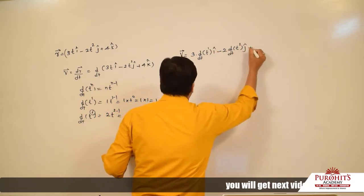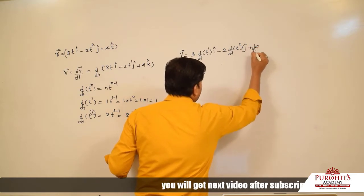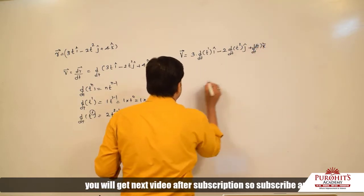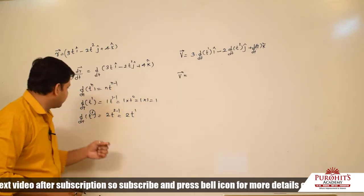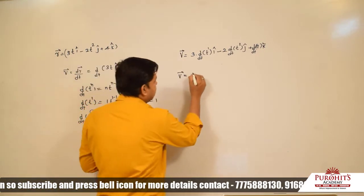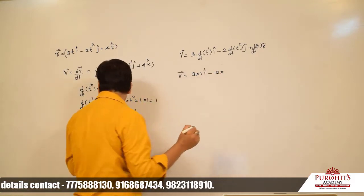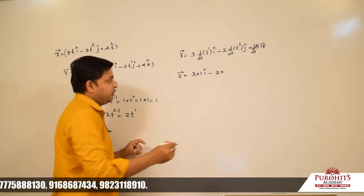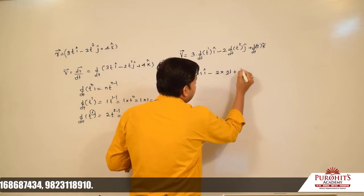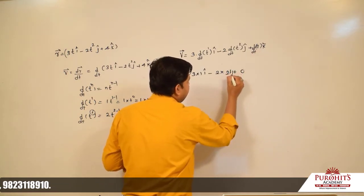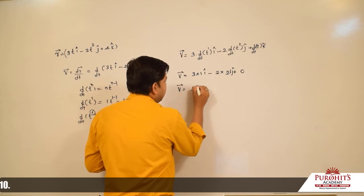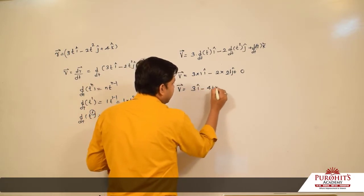Differentiation of 4 with k cap gives us velocity. t power 1 becomes 1. So 3·1 î - 2·2t ĵ, and 4 is constant. The velocity vector is 3 î - 4t ĵ.